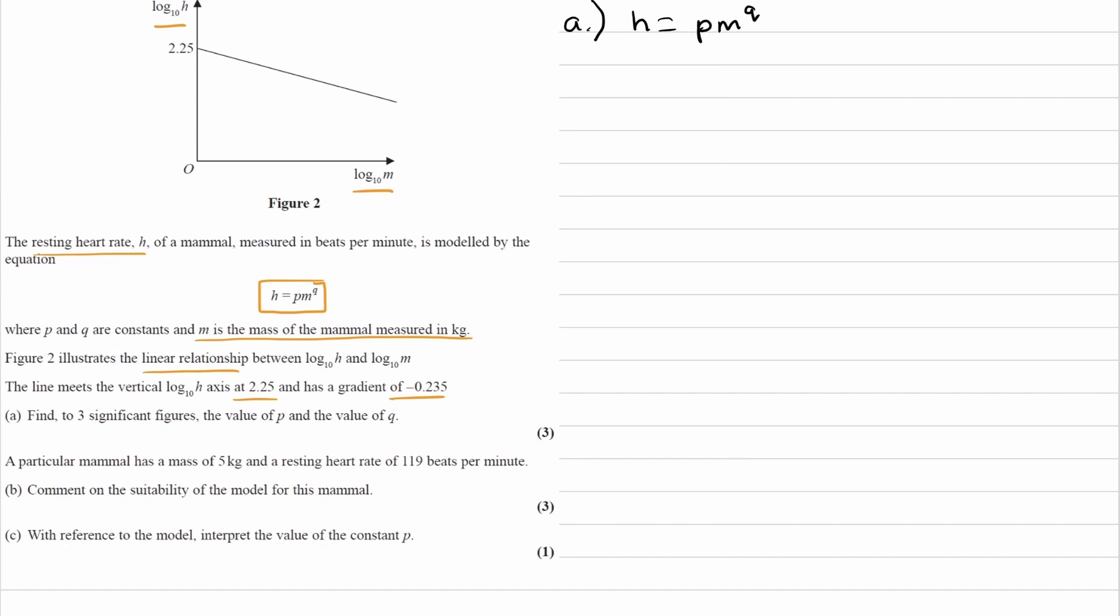And then we're trying to work out what p and q are to three sig figs. So my hint for this part would be to think about the fact that this is a straight line. We're given a y-intercept and a gradient for the straight line. How can we turn this into some kind of straight line so that we can insert that gradient and that y-intercept? To figure that out, you want to also think about the axes, the quantities that we have on the axes of the graph.